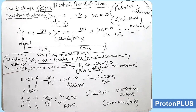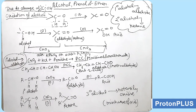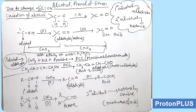PCC recognizes the OH group of a 1° alcohol and oxidation stops at the aldehyde. For example, but-2-en-1-ol in presence of PCC: the OH group of the 1° alcohol is oxidized to CHO, and the product is but-2-enal, commonly known as crotonaldehyde. PCC recognizes only the 1° alcohol OH group and will not oxidize the carbon-carbon double bond.